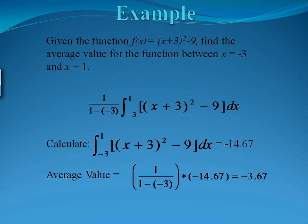So when we multiply, we're going to multiply by 1 divided by 1 minus negative 3. Notice that the minuses will cancel and you're multiplying by 1 fourth. When you multiply these two numbers together, you'll get an average value of negative 3.67.